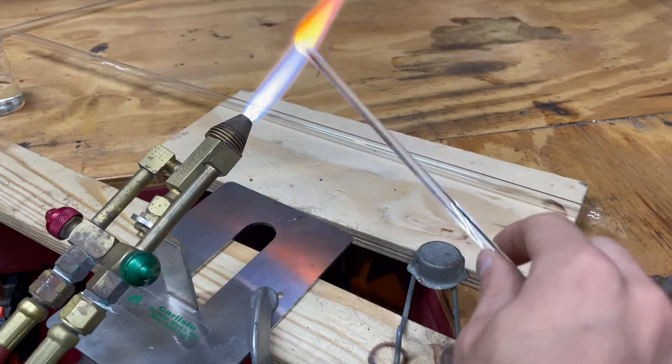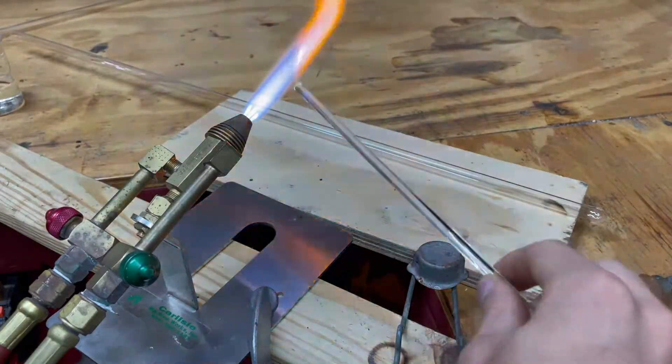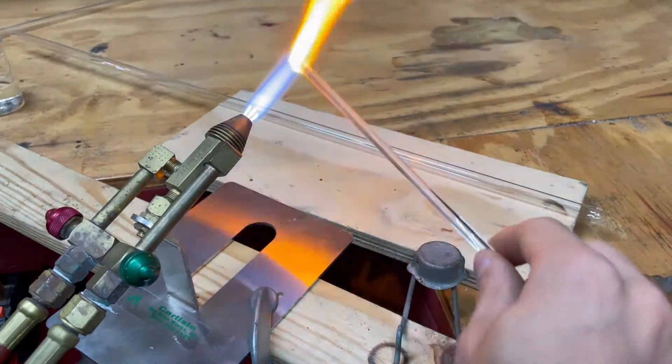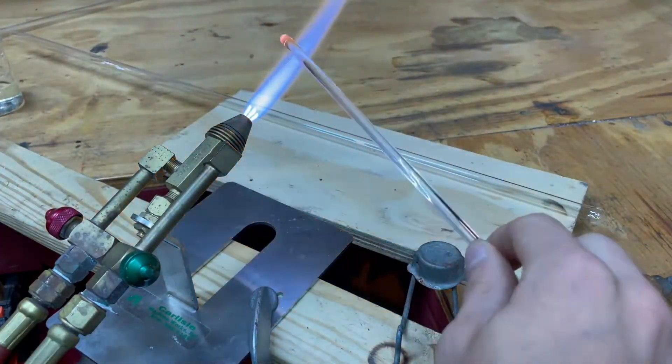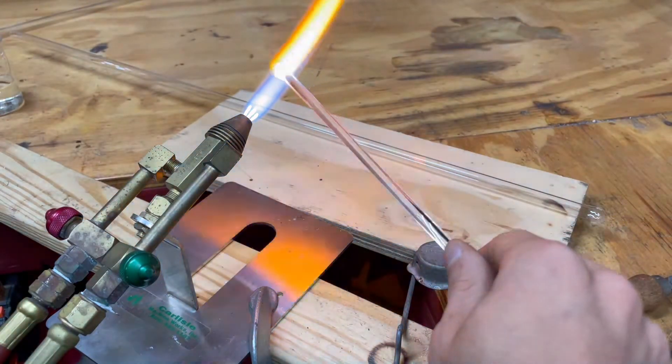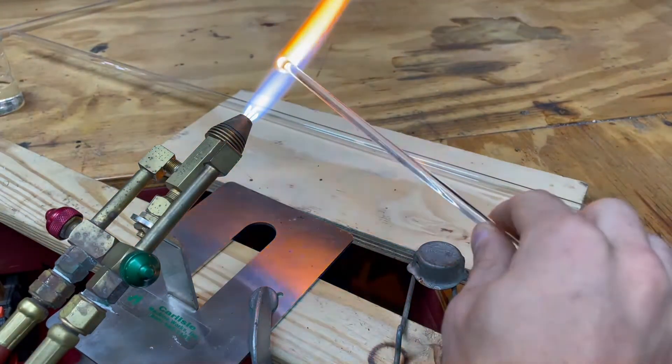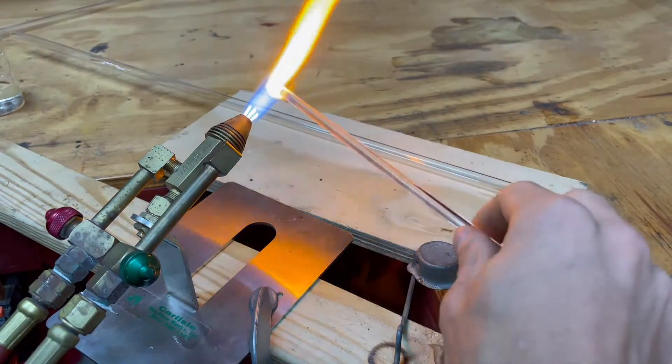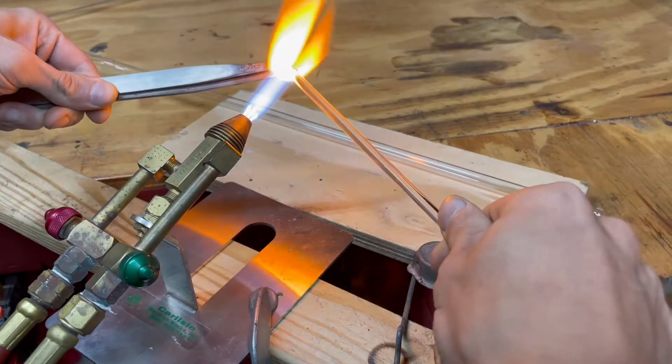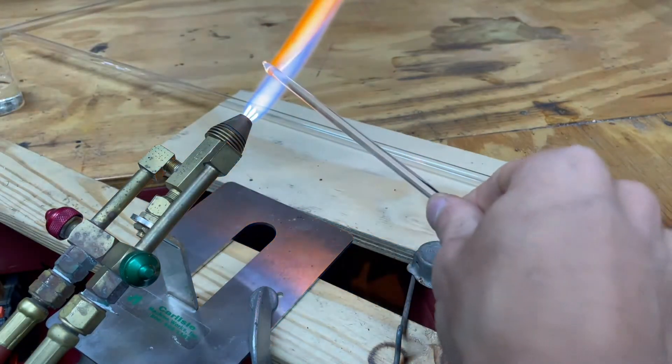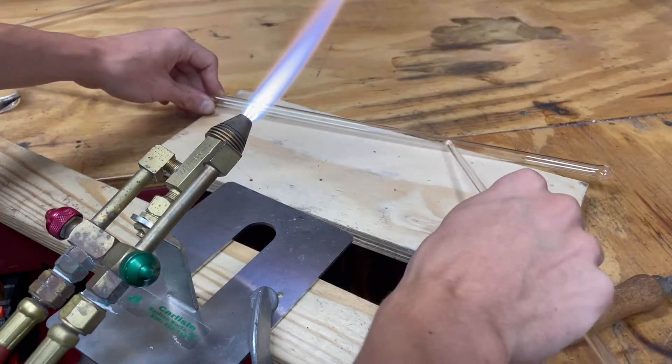As you do it you're going to want to move it closer to the working area of the torch. And you can see the sodium flare started to occur which means the glass is starting to melt. Now you can slowly rotate it. Now we got a large bead forming and we don't really need that so we can pull that off with the torch tips.